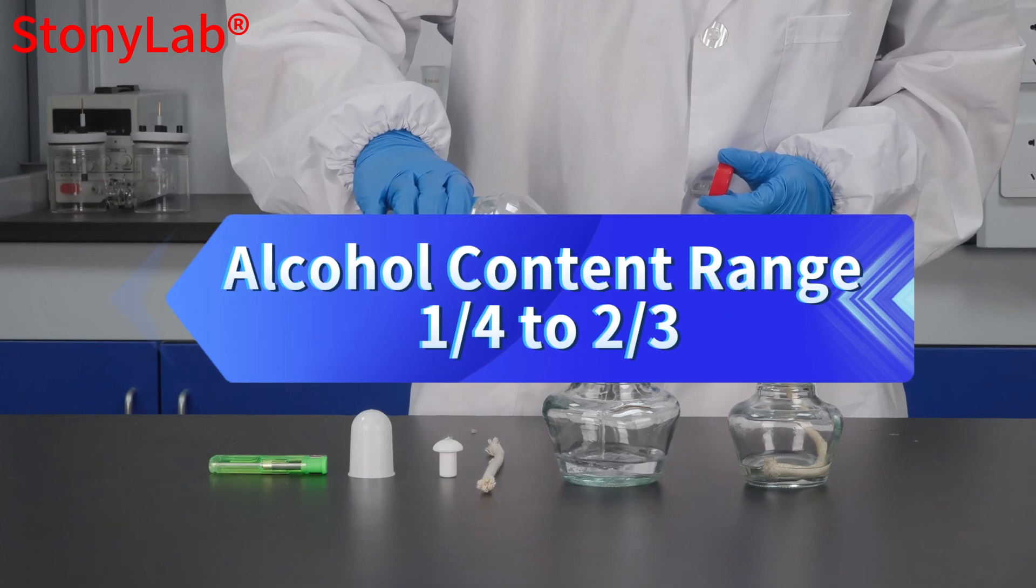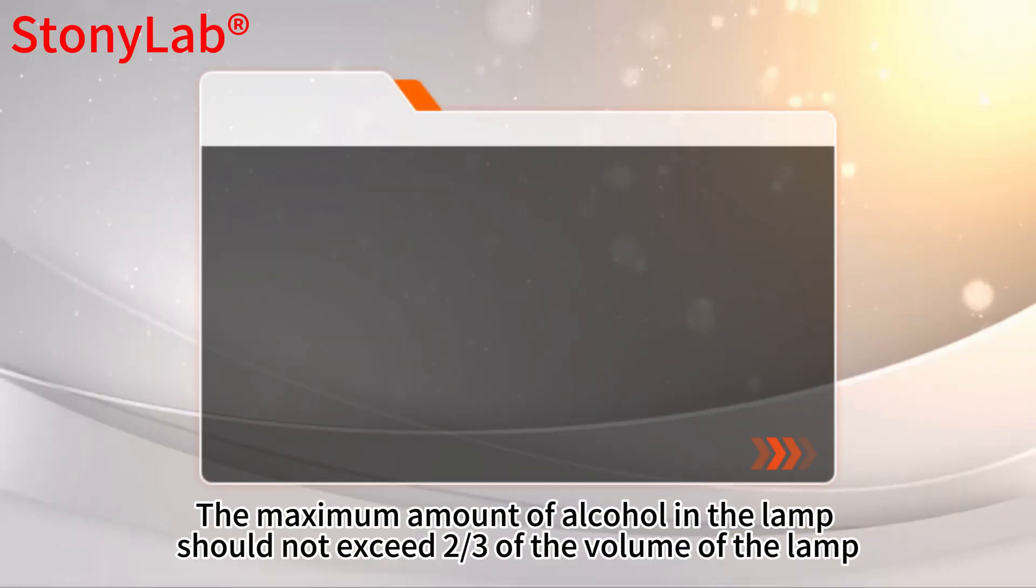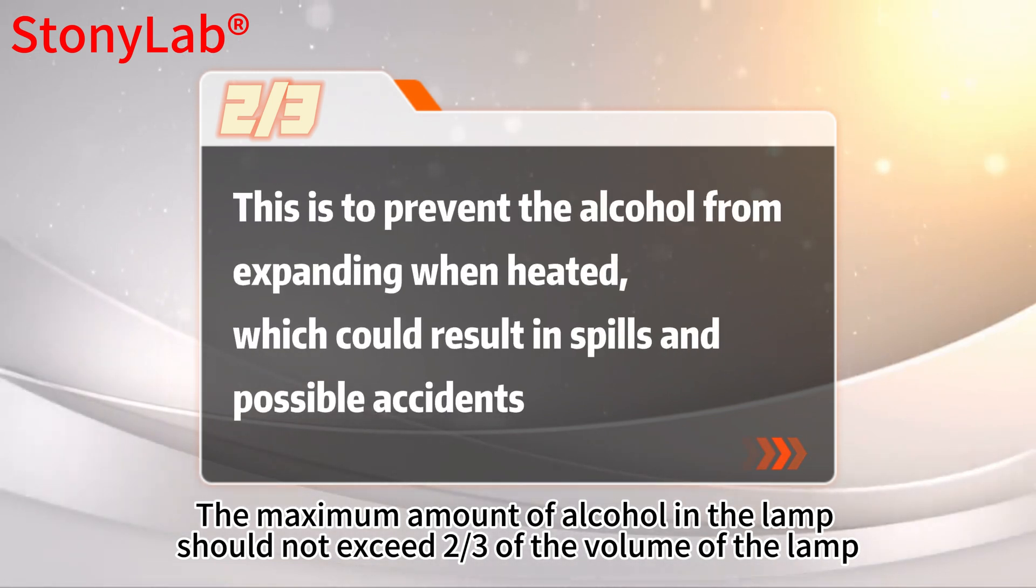Alcohol content range: 1 quarter to 2 thirds. The maximum amount of alcohol in the lamp should not exceed 2 thirds of the volume of the lamp. This is to prevent the alcohol from expanding when heated, which could result in spills and possible accidents.